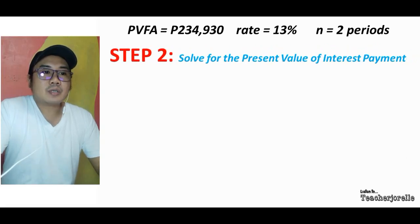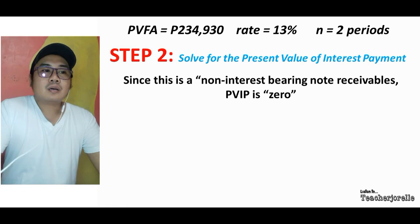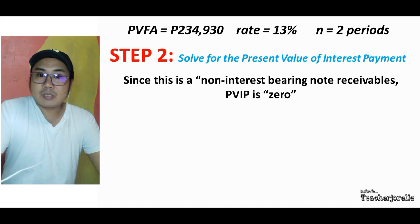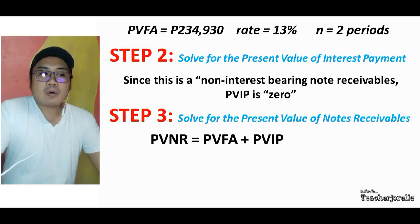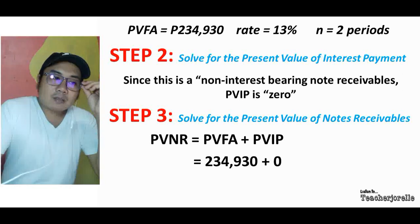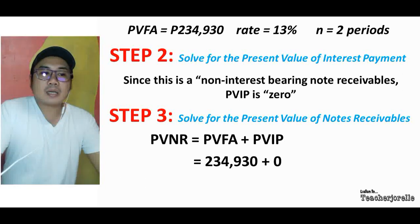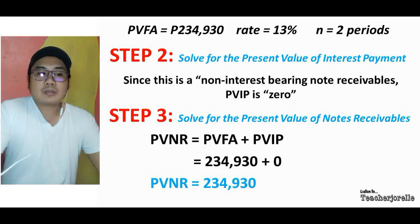Step 2: Solve for the present value of the interest payment. Since this is a non-interest bearing note receivable, the present value of the interest payment (PVIP) is equal to zero. Step 3: The present value of the note receivable equals the present value of the face amount plus the present value of the interest payment — 234,930 plus zero — which equals 234,930.